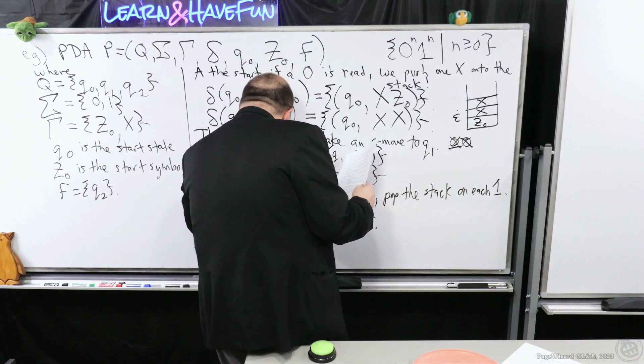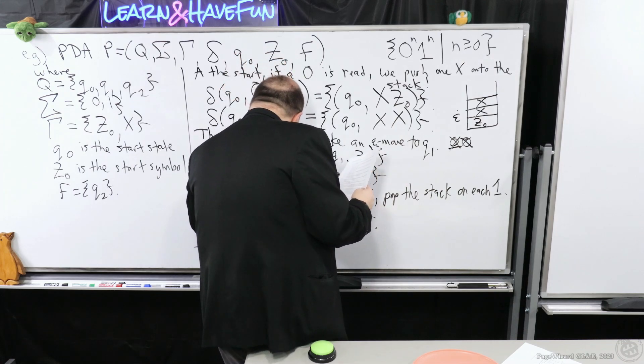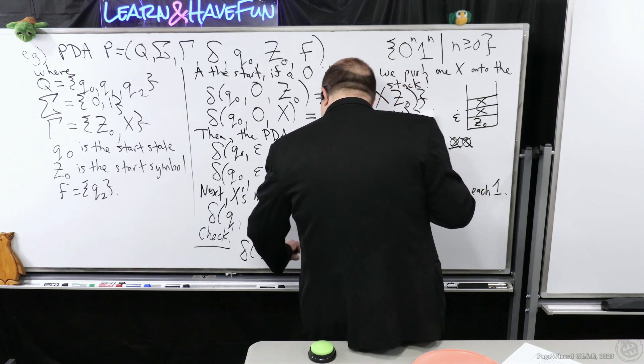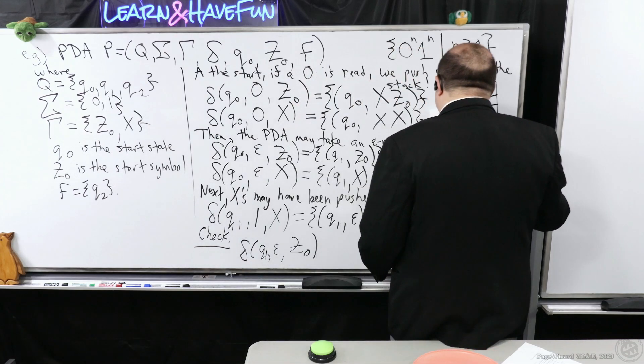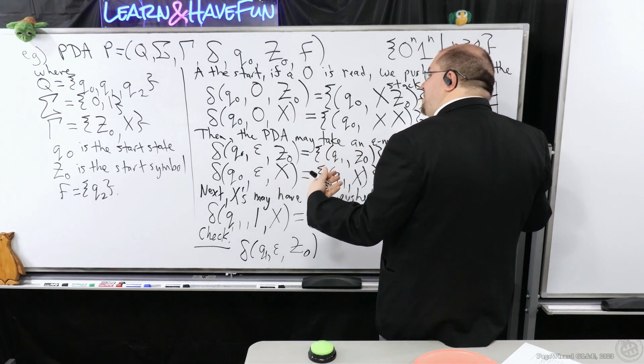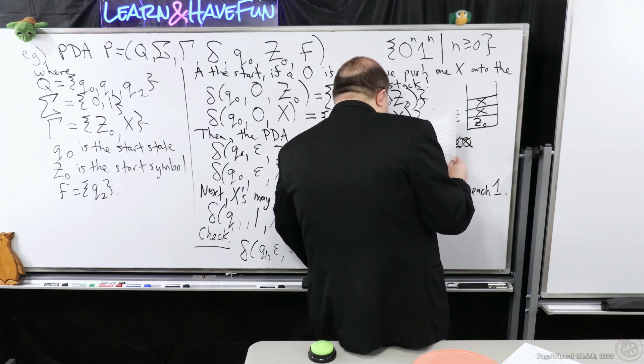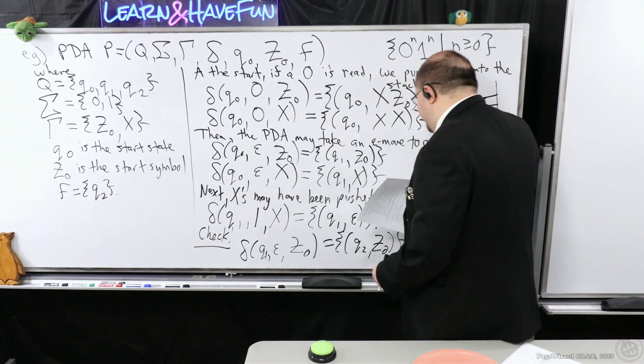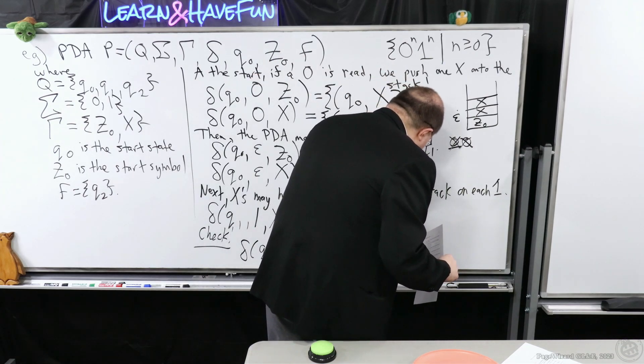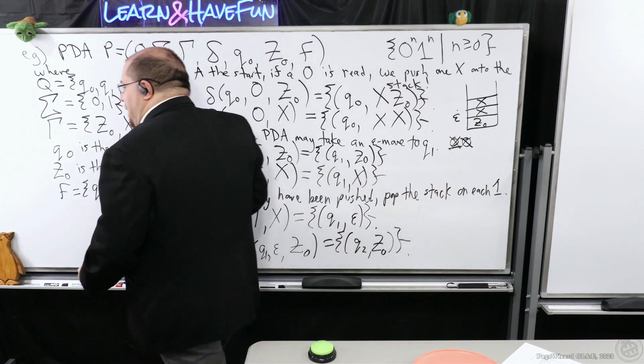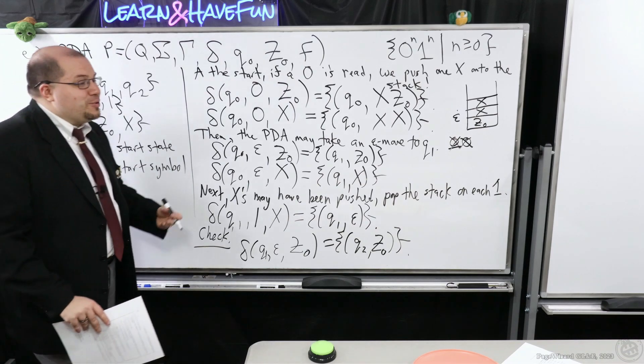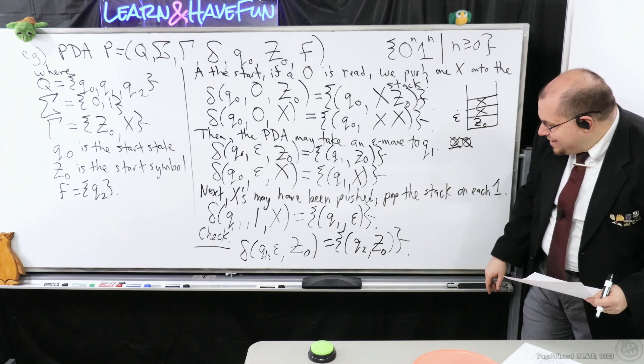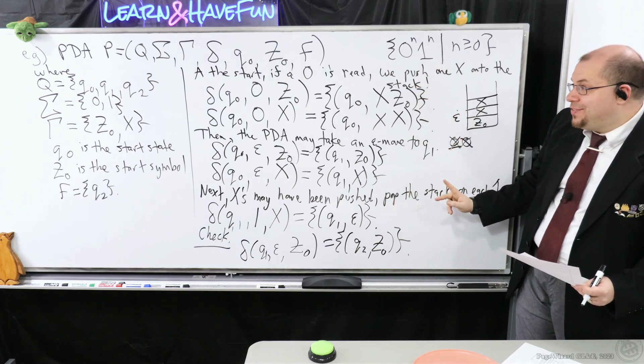However, if our thread gets killed before we can get over there, then we certainly can't accept. So we're going to have it where it's in Q1. We're going to make an epsilon move. If the top of the stack is Z0, if we have no more Xs, then the top of the stack will be the start symbol. But in that case, it will be Q2, and it won't mutate the stack. Just keeps that at Z0. So notice that this actually defines the transition function. For all others, they're going to be empty.